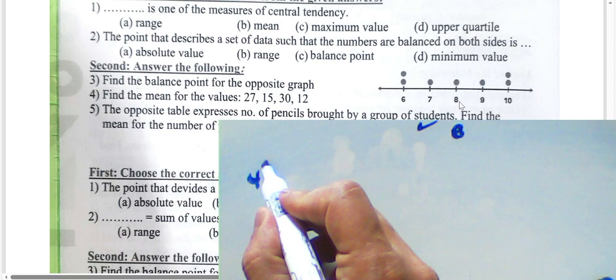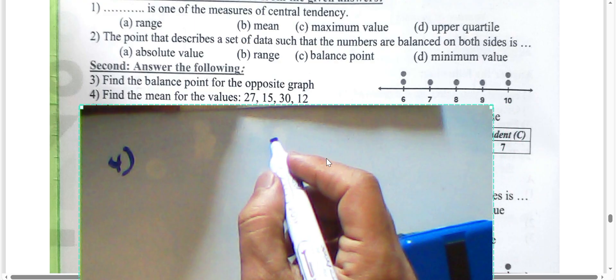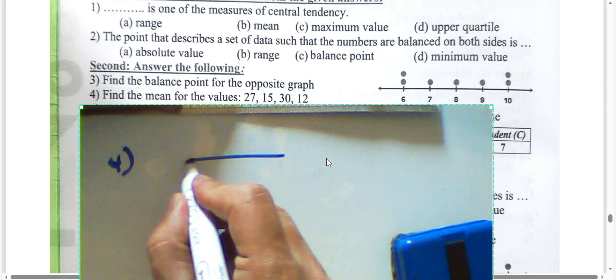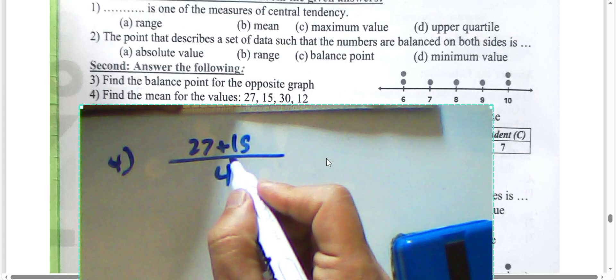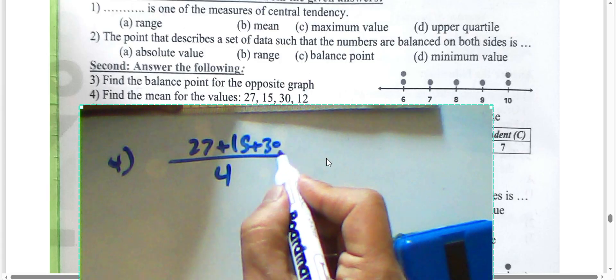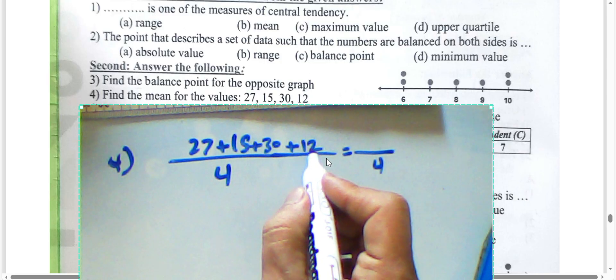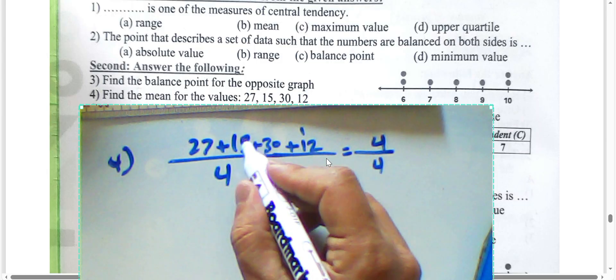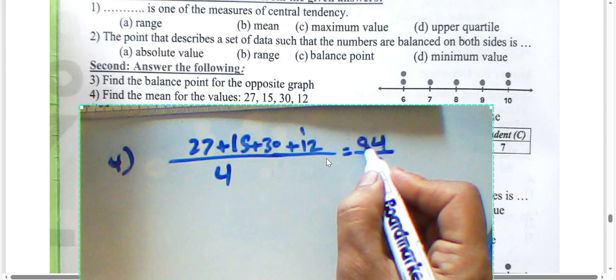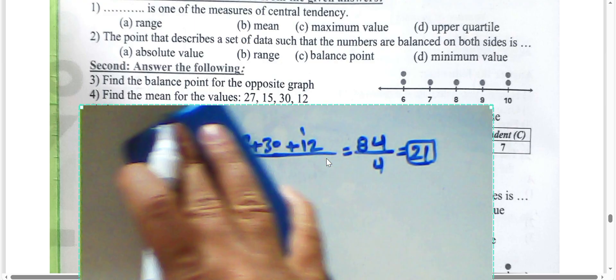Question four: find the mean of the values. Collect all numbers and divide by the number of digits — we have four digits. The values are twenty-seven, fifteen, thirty, and twelve. Adding: two plus five is seven, seven plus seven is fourteen, carry one. The result divided by four gives twenty-one. The mean is twenty-one.